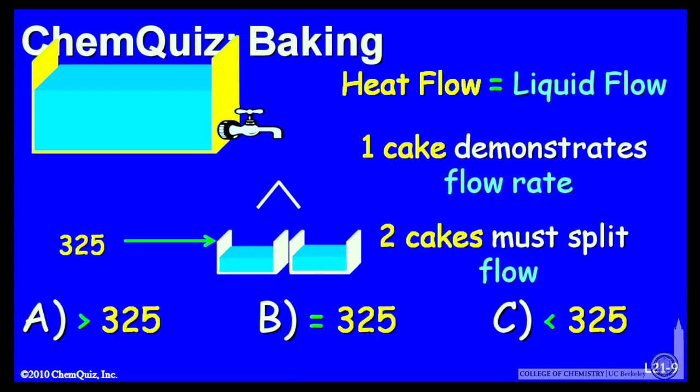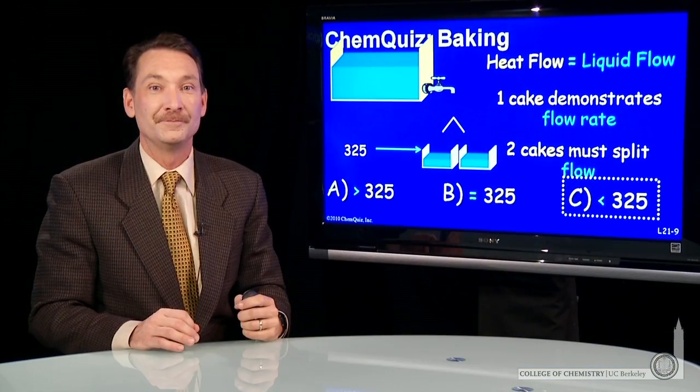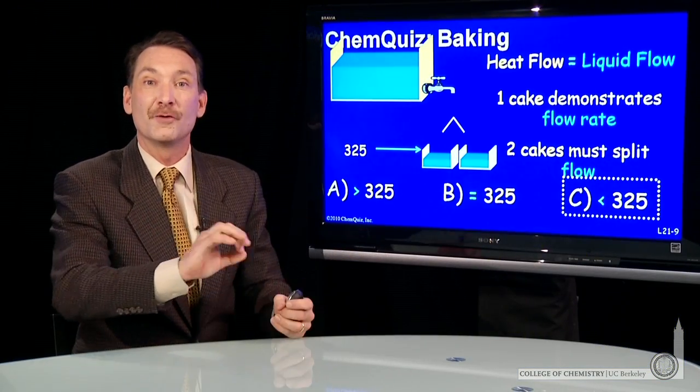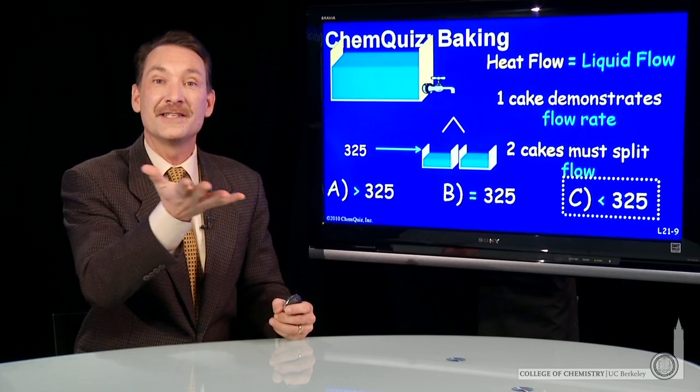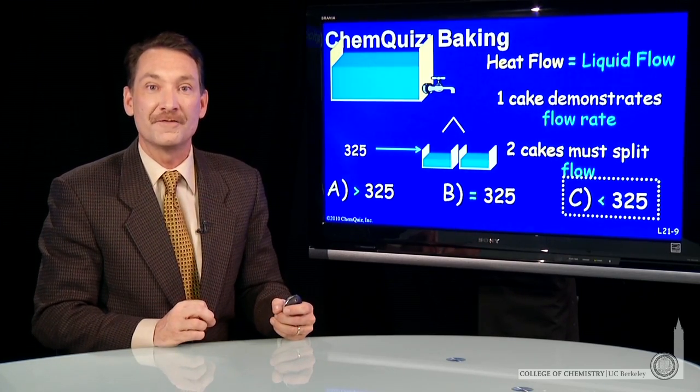So the temperature will be lower for those cakes if two are baked in the same oven. And you may have heard this. If you try to bake a cake, and the recipe says bake at 325 for a half hour, that's how long it takes to raise the cake to 325 degrees.